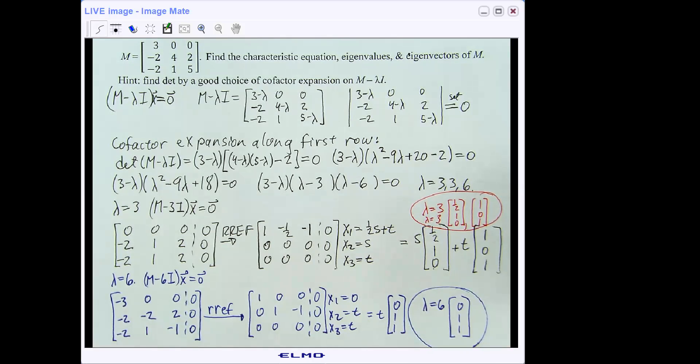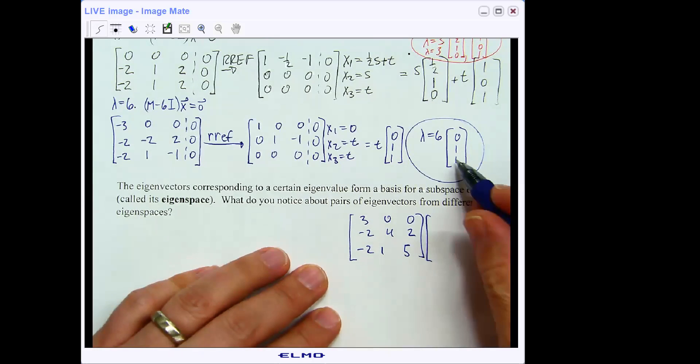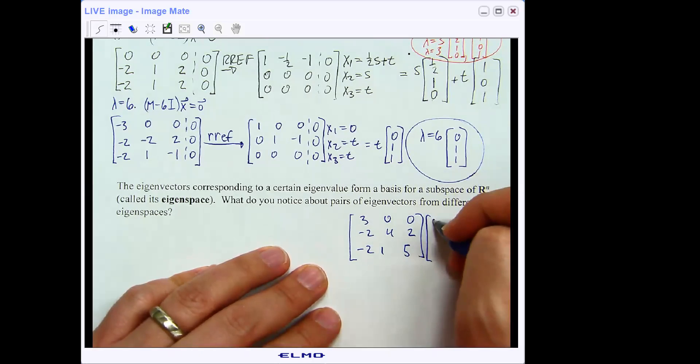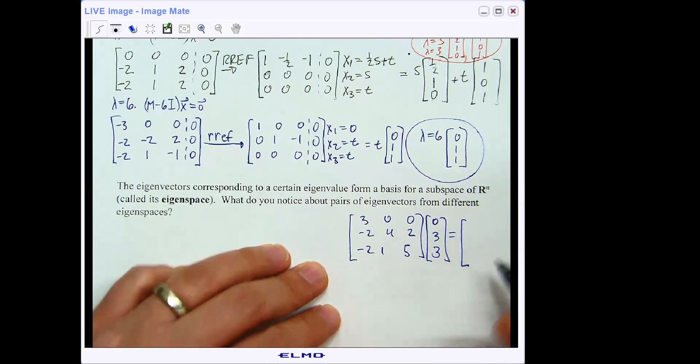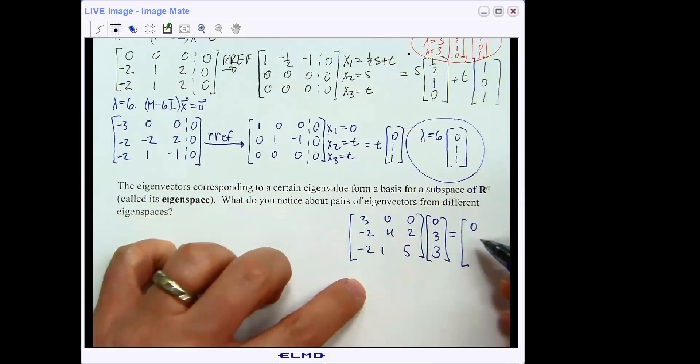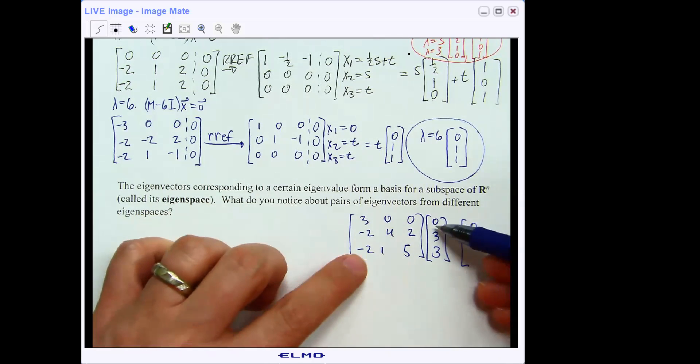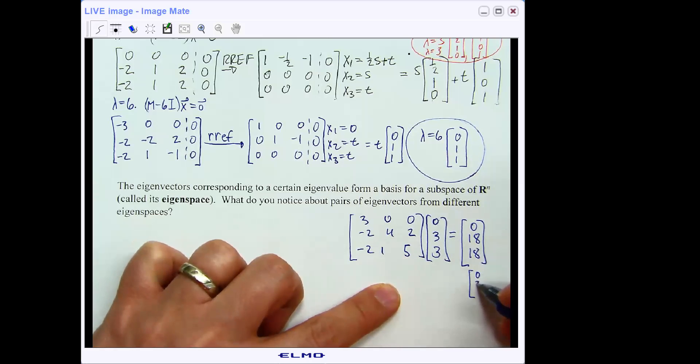So just a quick thing, let's take our original matrix [3, 0, 0; -2, 4, 2; -2, 1, 5]. And if I multiply by some scalar multiple of this guy, so let's say [0, 3, 3]. So if I'd chosen T to be 3, let's see what I get here. I'll get 0 plus 0 plus 0, which is 0; 0 plus 12 plus 6, which is 18; and 0 plus 3 plus 15, which is 18. But notice how this vector is the original guy multiplied by my eigenvalue.